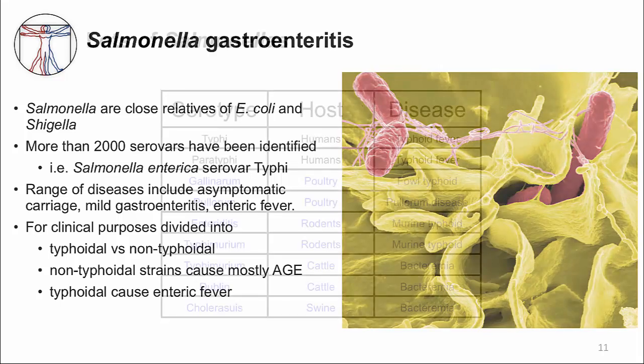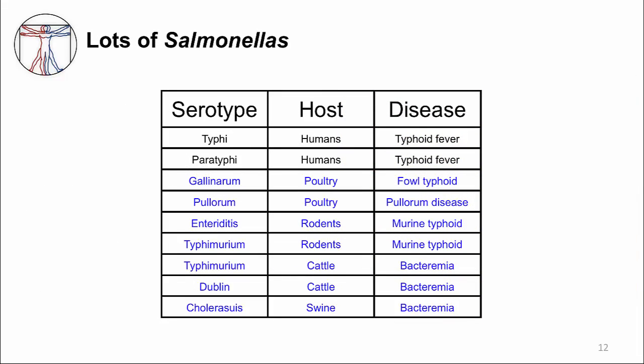Salmonella uses different hosts. The strains causing typhoid fever are restricted to humans. Salmonella infection in one animal may not be the same in another — for example, Salmonella enteritidis and typhimurium infect mice and cause murine typhoid, but cause gastroenteritis in humans. Many serotypes that cause gastroenteritis in humans actually cause more systemic disease in their host animal. All non-typhi Salmonella infections in humans are transmitted from animals to humans.